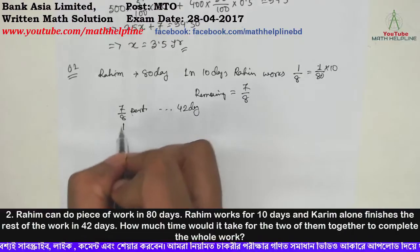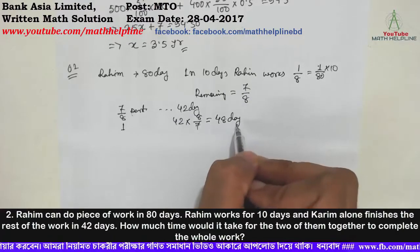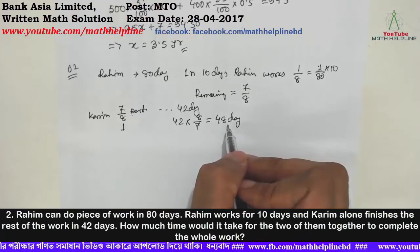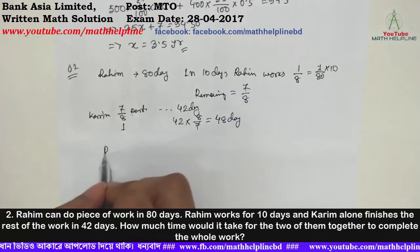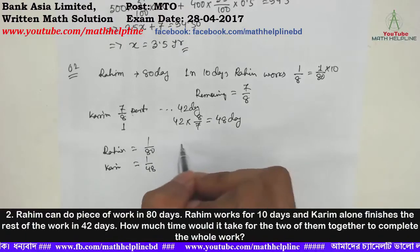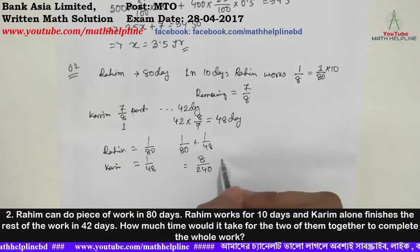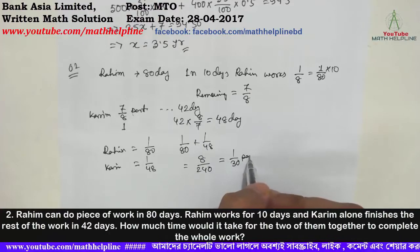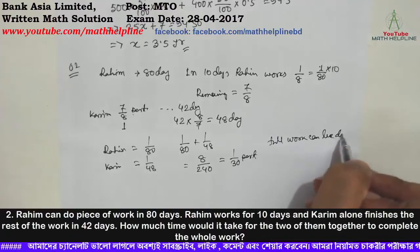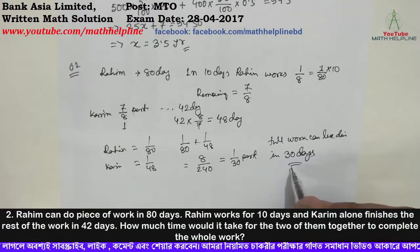Corim can complete the work in 42 days. So Corim does 42 into 8/7 work. Corim can finish the work in 48 days. Together Rahim and Corim in one day can do 1/8 plus 1/48 which equals 1/30 part. That means together they complete 1/30 part per day.